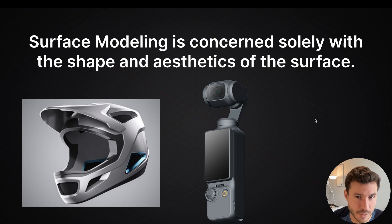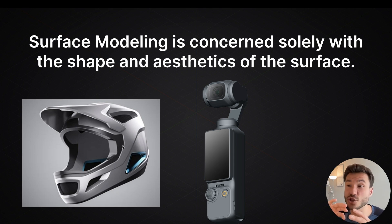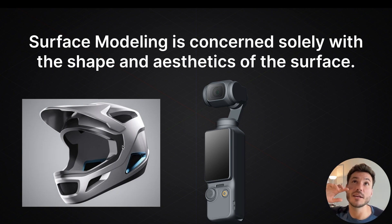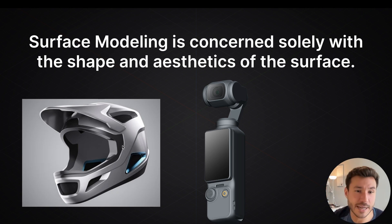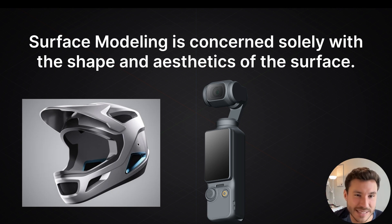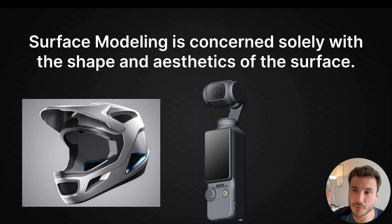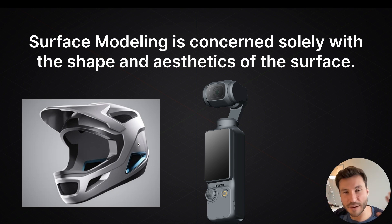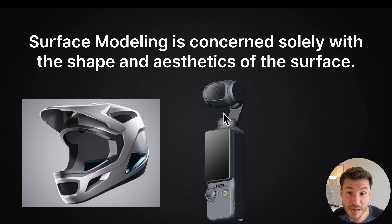Just two quick examples from my courses: on the left, we are just creating the helmet — how it looks, the aerodynamics, the design. We don't care what's inside, we don't care about the material it's made of, we don't care about the different layers for protection and everything that happens inside a helmet.